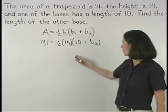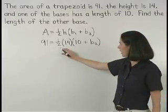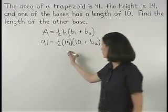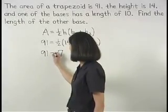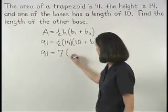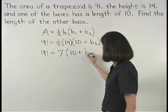Now simplifying on the right side, one-half times 14 is 7, so we have 91 equals 7 times parentheses 10 plus B2.